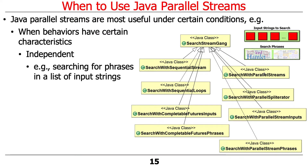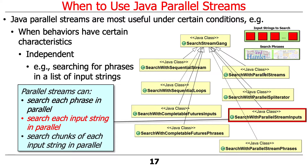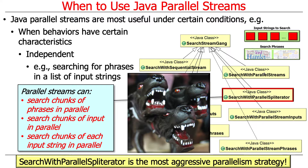With the search stream gang program, there are several variants that chop the world up into little pieces under different arrangements: searching for each phrase in parallel, searching for each input string in parallel, and the search with parallel spliterator where the input string is chunked up into pieces. That last one is the most aggressive and performed the best. The reason it performs well ultimately comes down to this issue of independent tasks that have no relationship to each other other than that they run on different parts of the input.